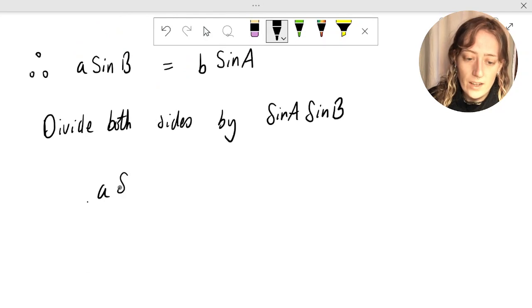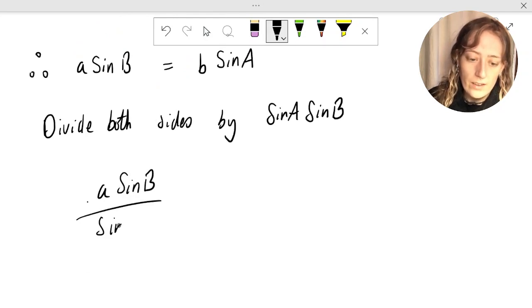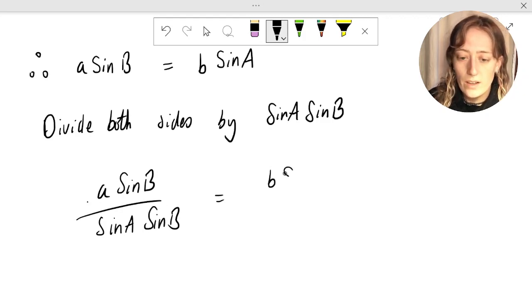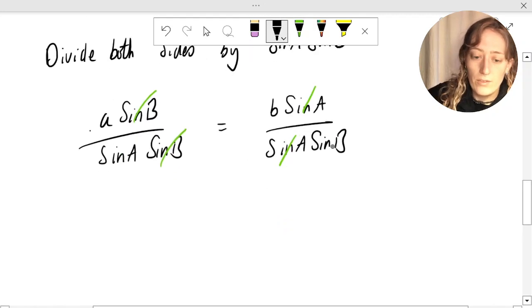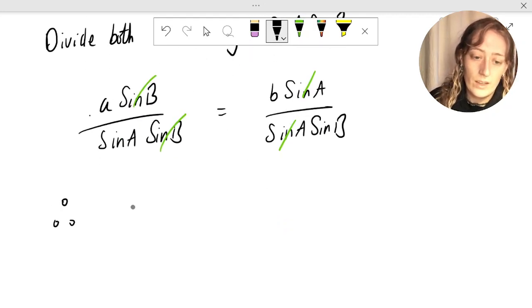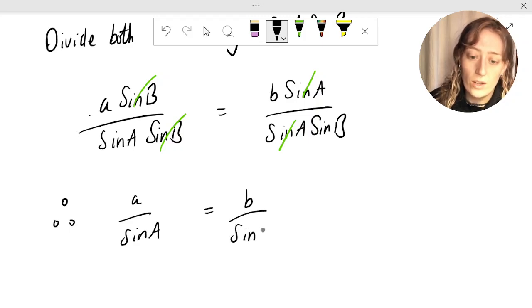So we have a sine b over sine a sine b equals b sine a over sine a sine b. What do we have? Well, sine a cancel sine a, sine b cancel sine b, and finally what we're left with is that a over sine a equals b over sine b.